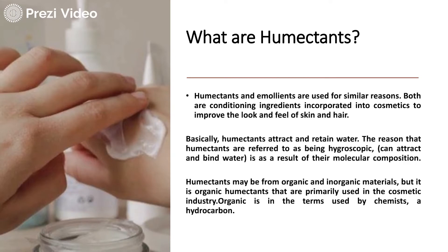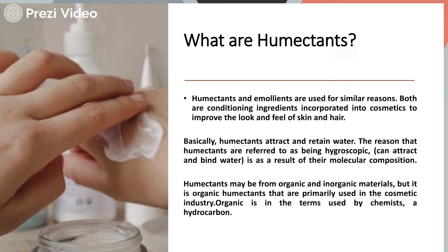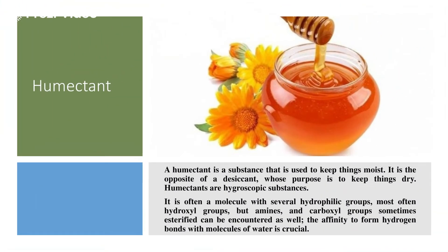Now what are hygroscopic substances? They are basically able to attract water, and the same is the case with humectants — they are able to attract water and also retain it. Humectants may be either from organic or inorganic material, but largely organic humectants are used in cosmetic formulations. The basic property of a humectant is that it is able to absorb and retain moisture. Because of this property, the formulation remains moist — you must have seen creams and lotions; they are always moist because they comprise humectants with excellent moisture-retention properties.